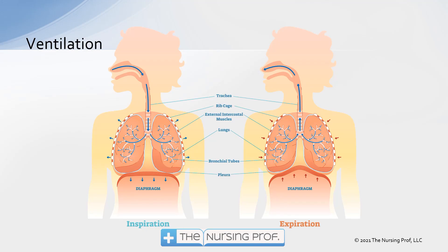In order to have perfusion occur, we first have to have ventilation. Ventilation is caused by two different mechanisms. The diaphragm drops — as you can see on the illustration — and with inspiration, it becomes flat, making a larger space in the thorax, creating negative pressure that sucks air into the lungs. On expiration, the diaphragm relaxes into its cone-like shape, making the thorax a smaller space and pushing air out.